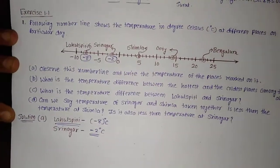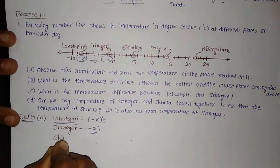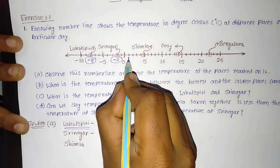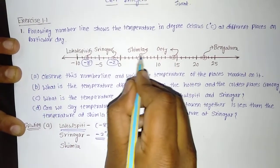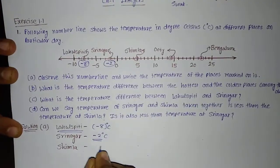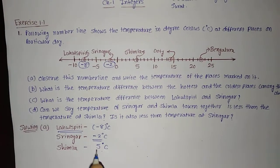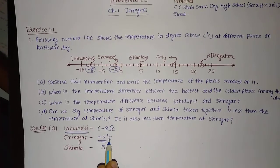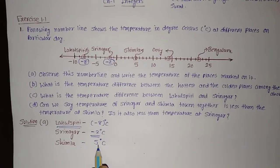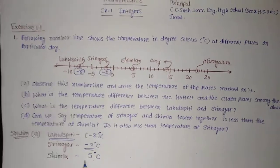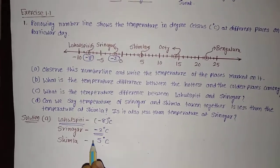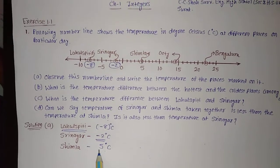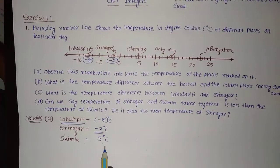Then the next place is Shimla. Let us see on the number line where Shimla is — 1, 2, 3, 4, and 5 — exactly it is on 5. So the temperature of Shimla is 5 degree Celsius. You can see Lahulspiti was minus 8, Srinagar was minus 2, but Shimla is positive — or we can say plus 5 degree Celsius. For positive numbers we are not writing the plus sign, but for minus we must write the minus sign. So we consider it as plus 5 degree Celsius.